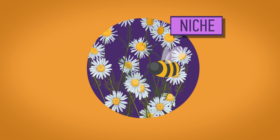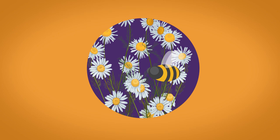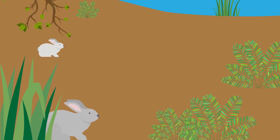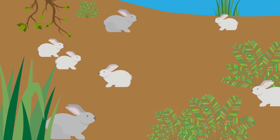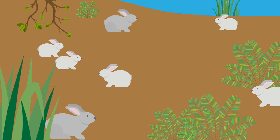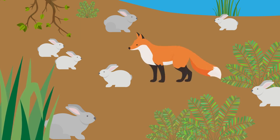A niche describes the role of a species within an ecosystem. So a bee's role is to pollinate the flowers. The rabbit's role, or niche, is to be a small grazing prey animal with a very high reproduction rate, which supports many predators in the ecosystem.